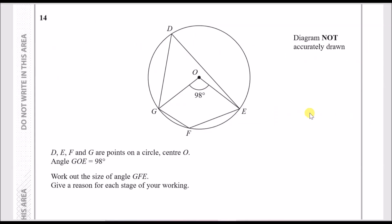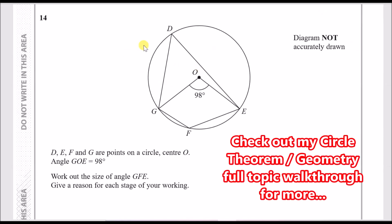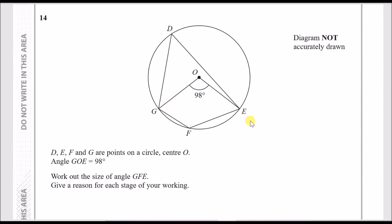Number 14: in every single paper you'll get a circle theorem question. Points D, E, F, and G are on a circle with center O. The angle GOE is 98 degrees. We need to work out the size of angle GFE — let's call this x — giving a reason for each stage of working.